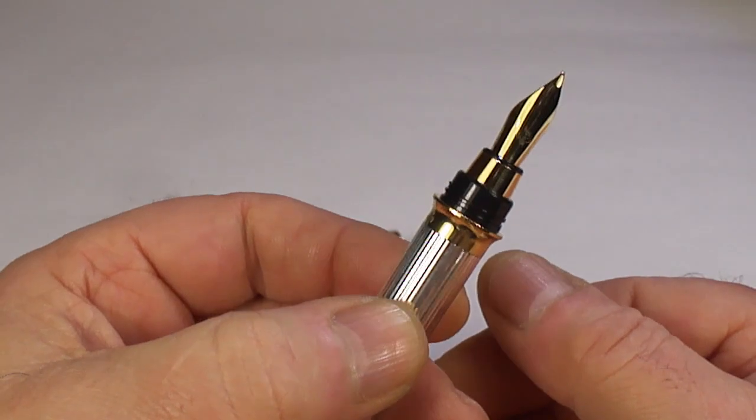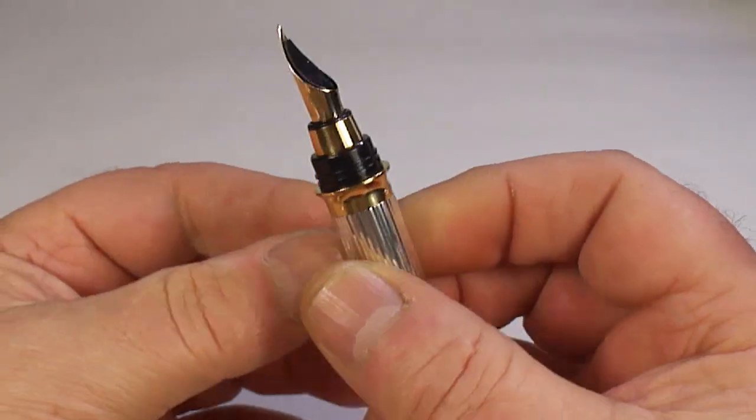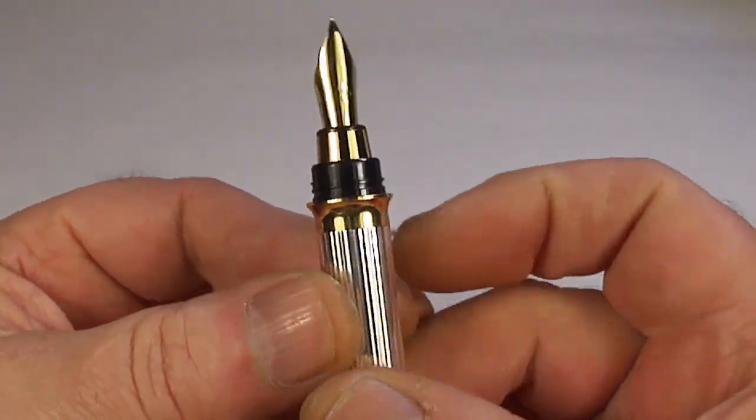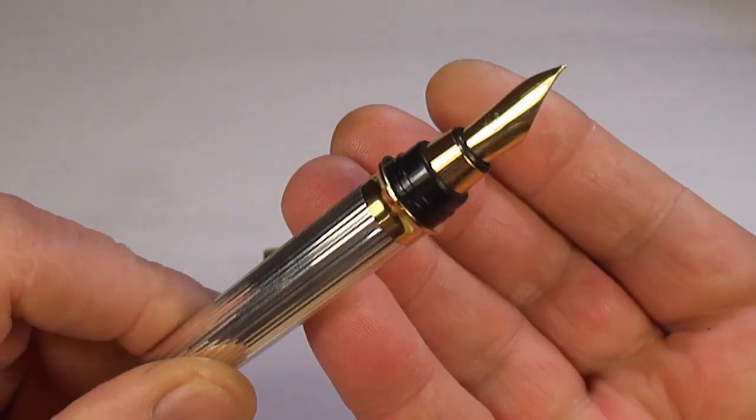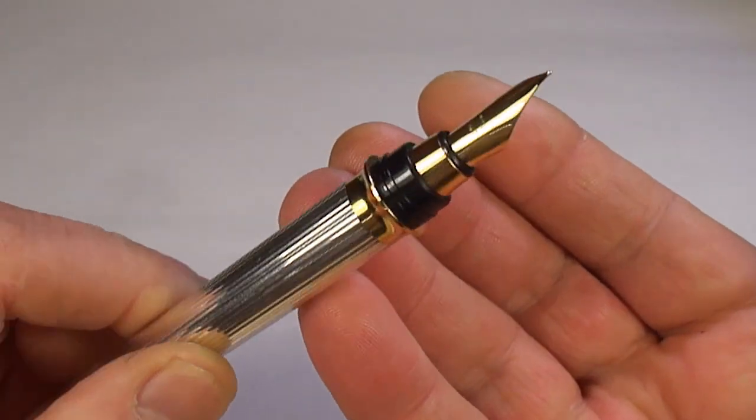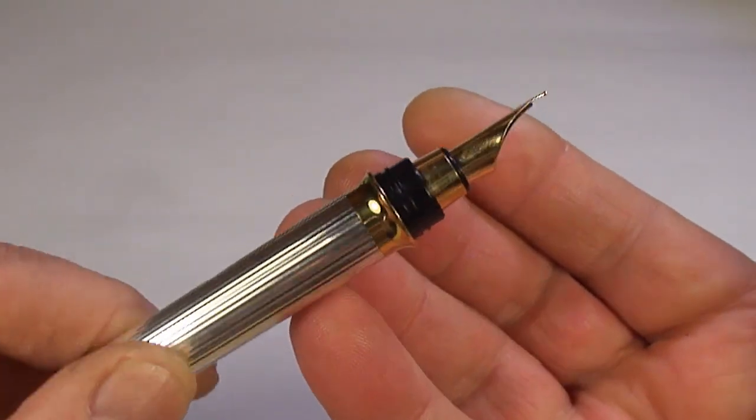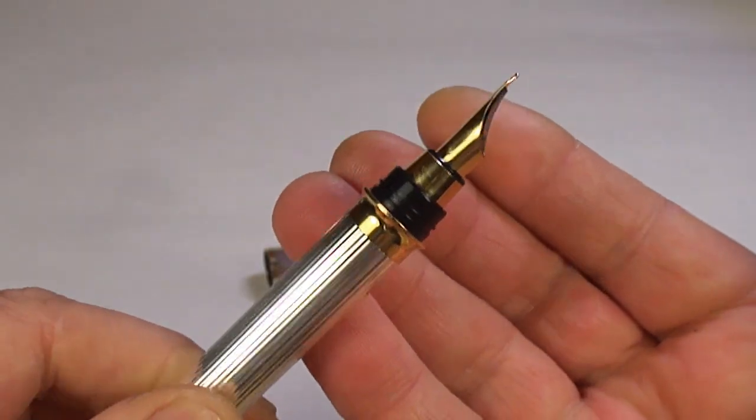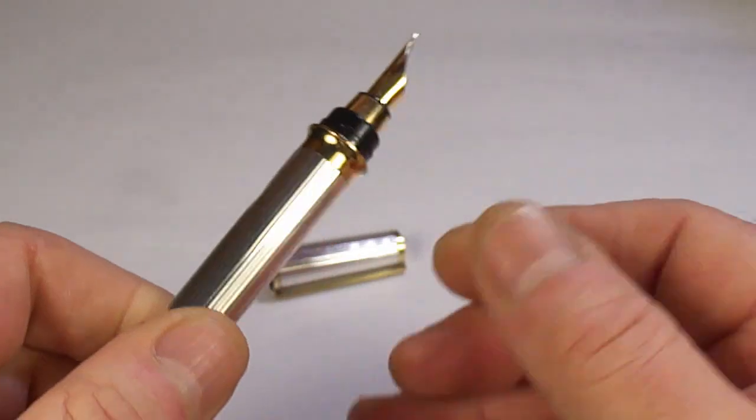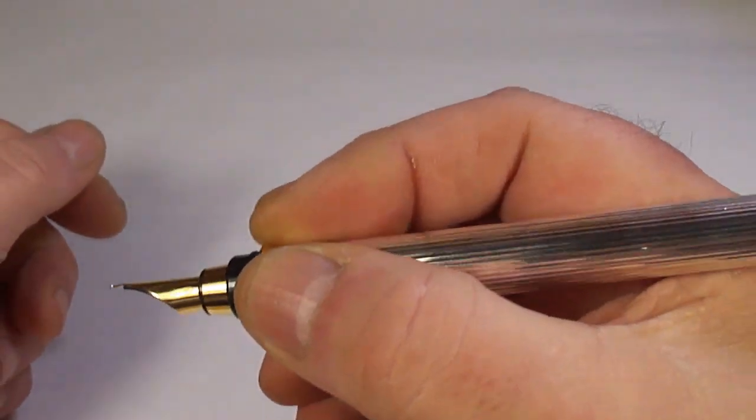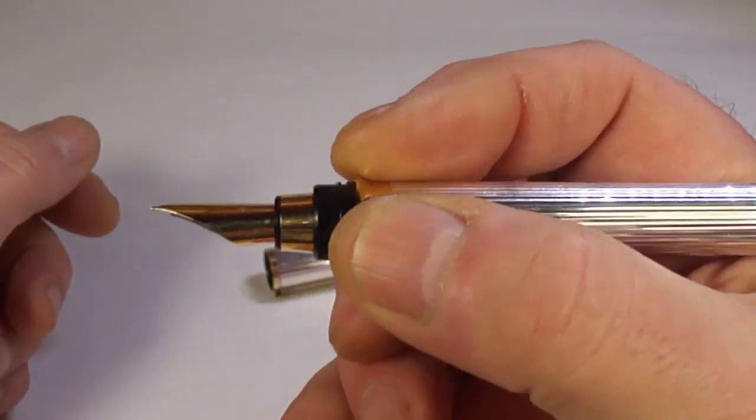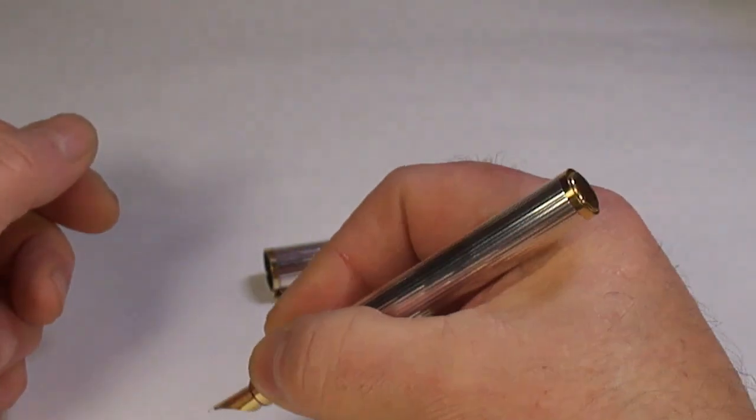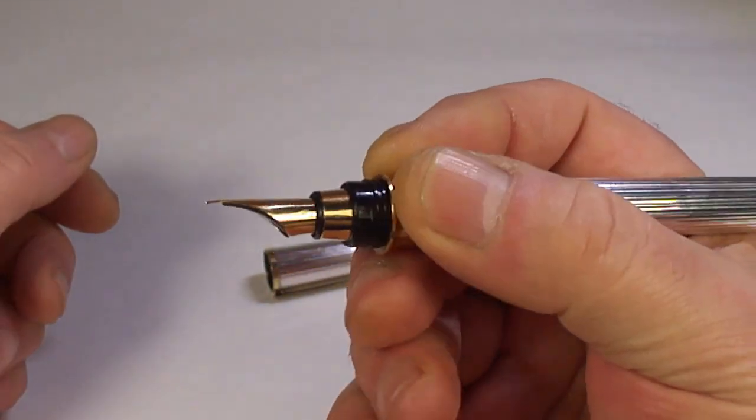Now, as you're looking at this, some of you will look at it like myself when I first saw it: there's no section, what's going on here? No section, well how do you actually, how do you actually hold the pen? Very interesting. Again, you hold the pen on the barrel like so, and away you would go writing with the pen.